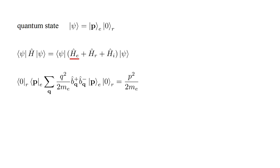The electron Hamiltonian is the sum over all momentum states q of the kinetic energy q-squared over 2m-e, times the number operator, b-hat q-plus b-hat q-minus. This term counts the single electron in the p-momentum state and extracts the electron kinetic energy, p-squared over 2m-e.